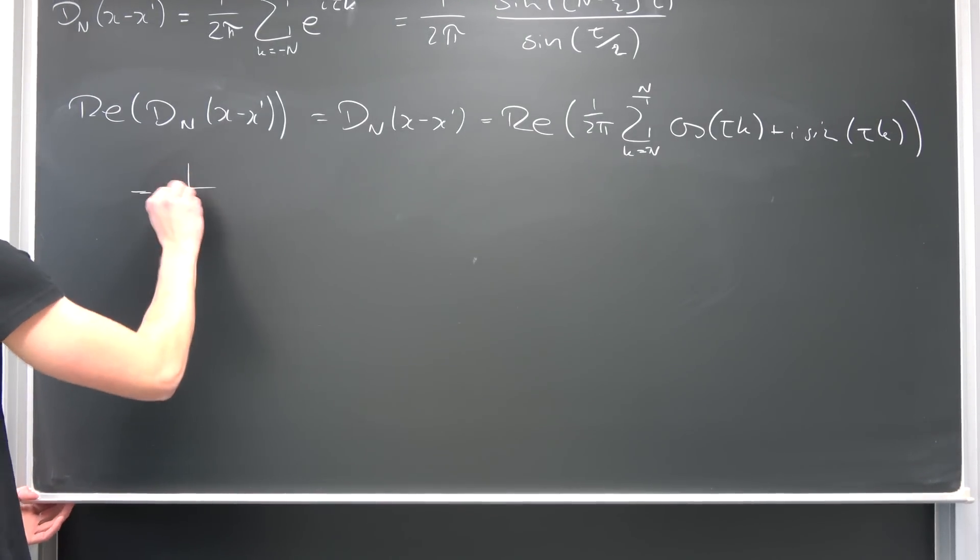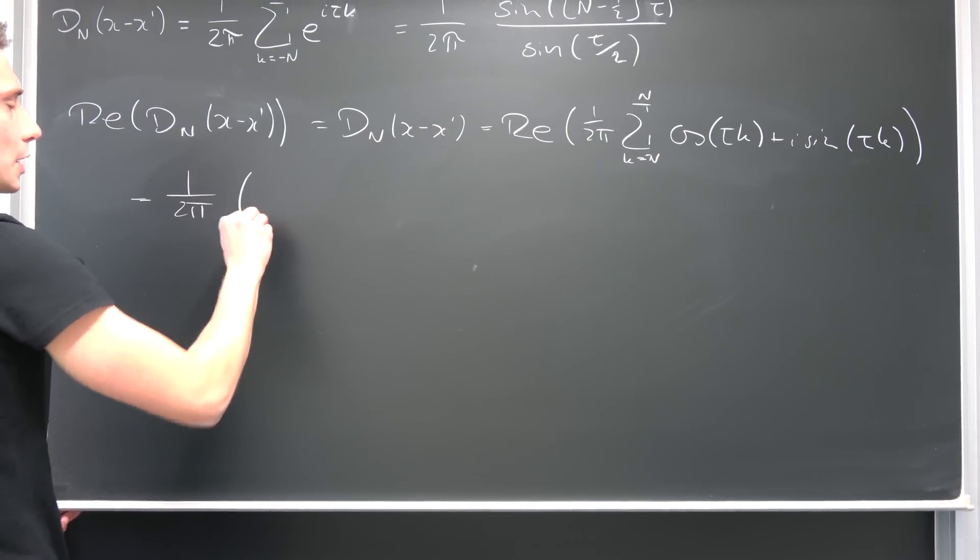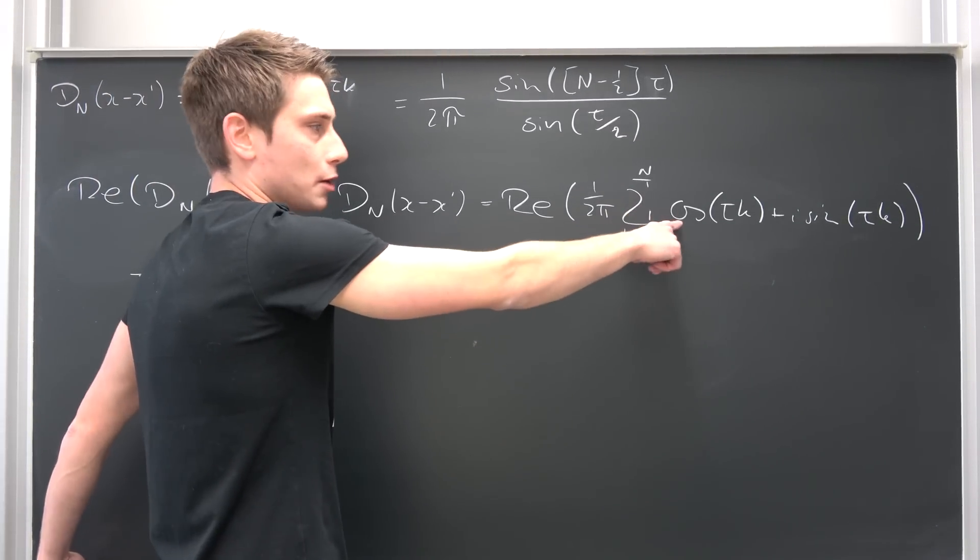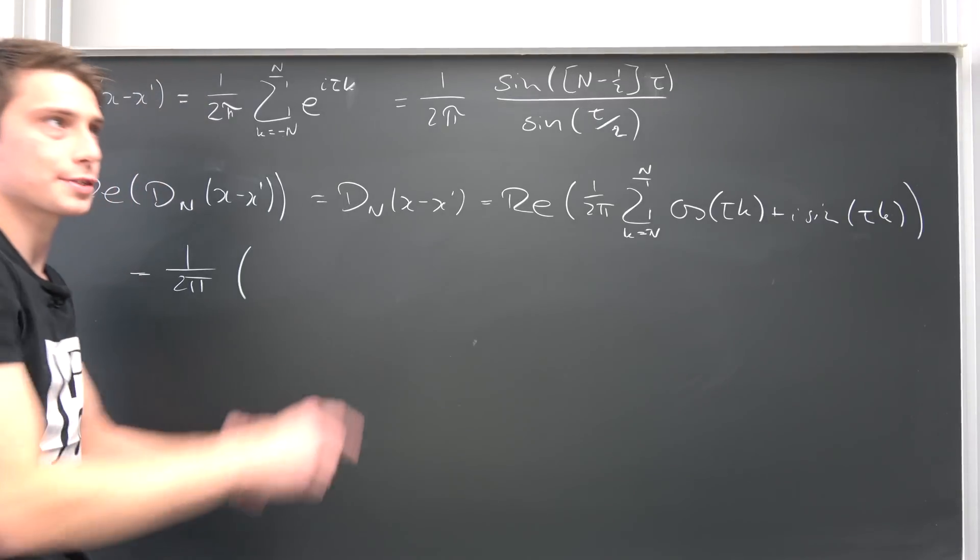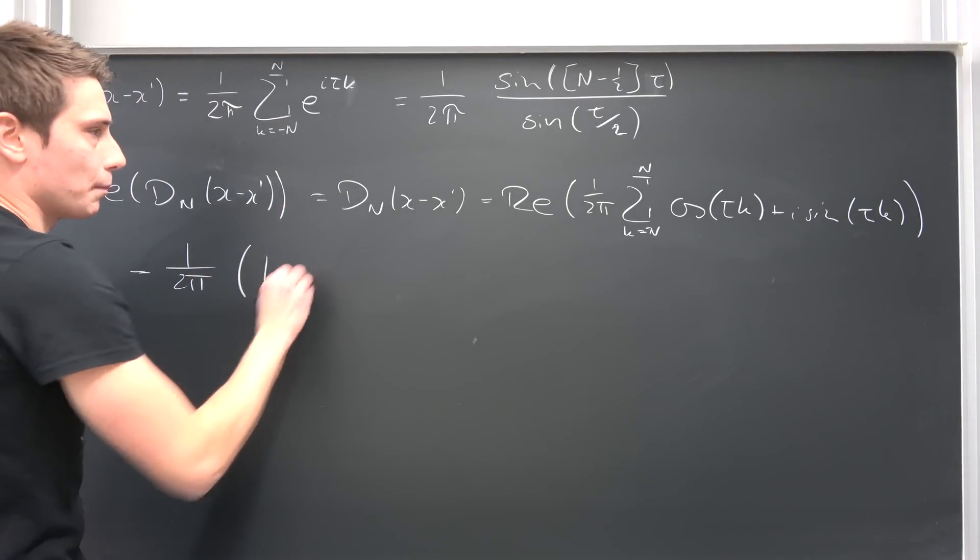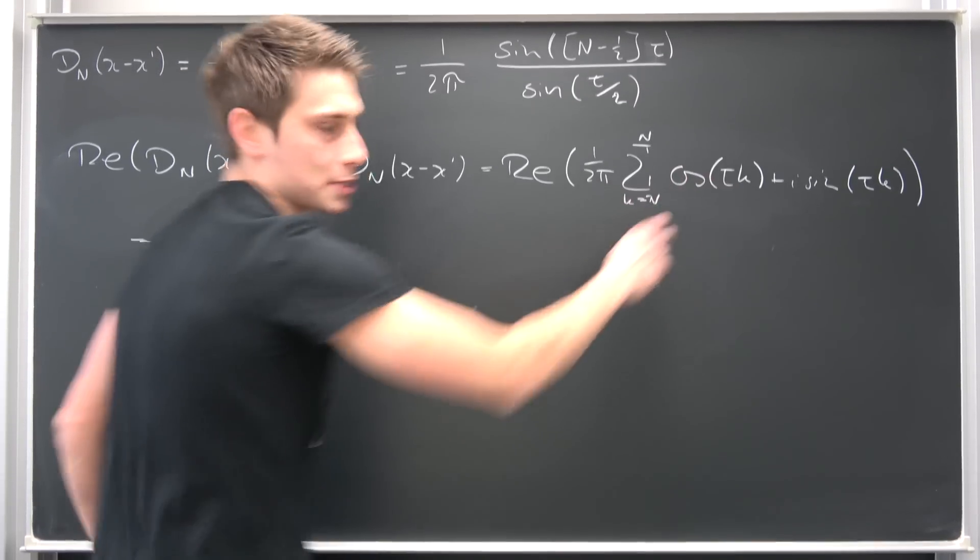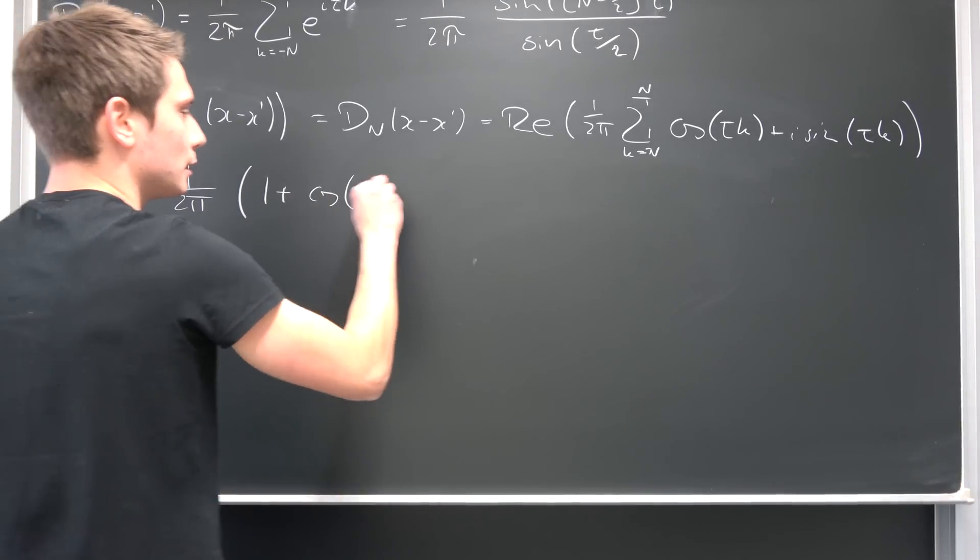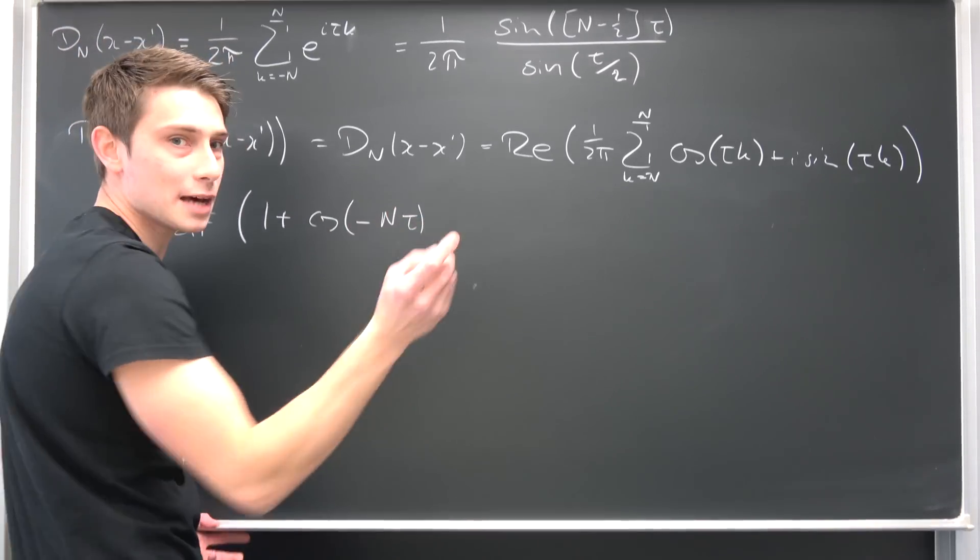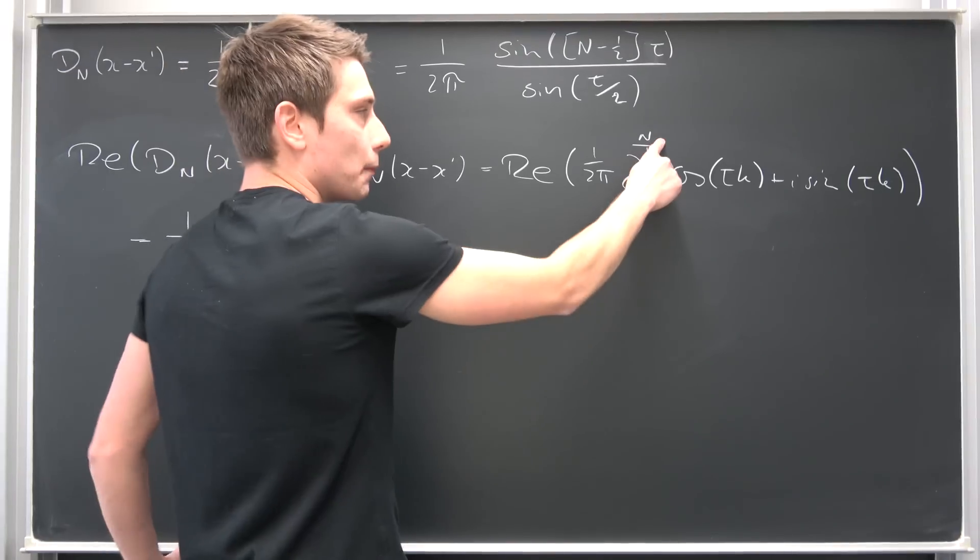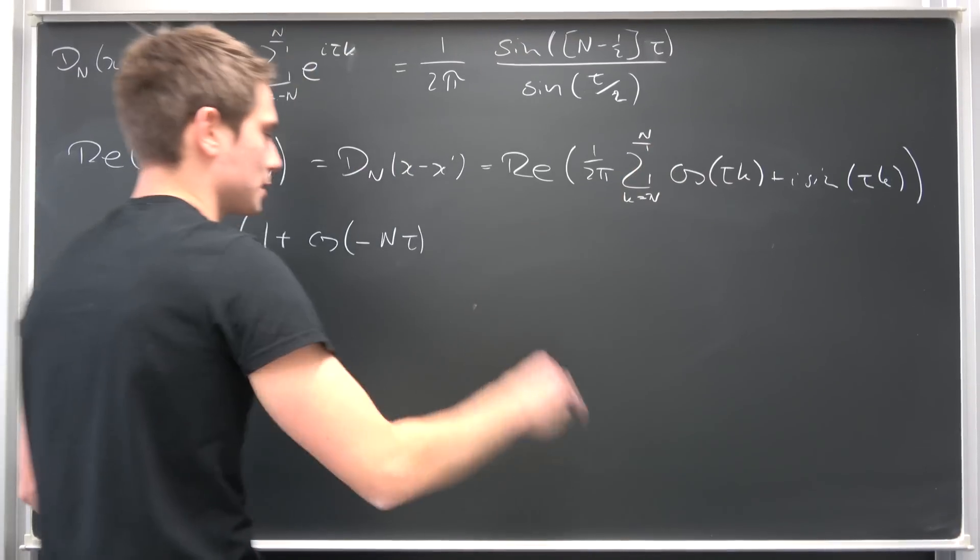So this is nothing but 1 over 2 times pi. Let's start off with the zero-th part. This is cosine of tau times zero. Cosine of zero is just 1. So this is 1 plus. Then we get the cosine of negative capital N times tau plus the cosine of N times tau.